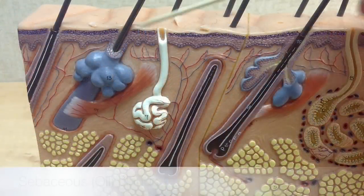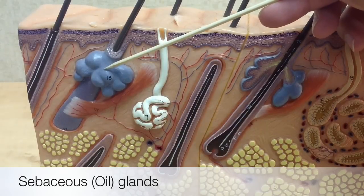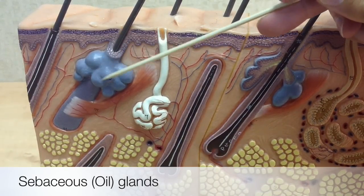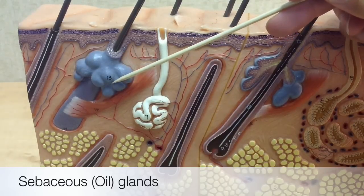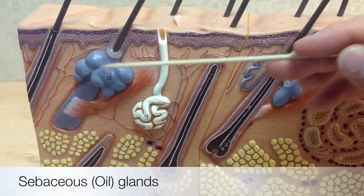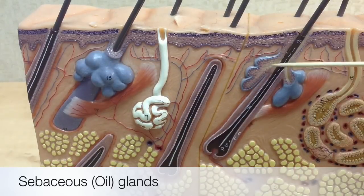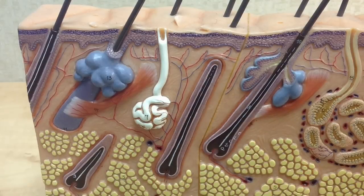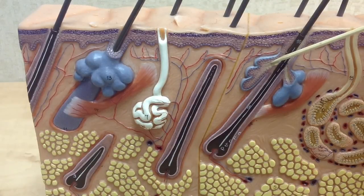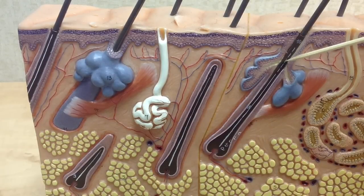The oil glands, also called sebaceous glands, are labeled number 13 on the model. These are rounded branched glands that are usually connected to the hair follicles, as we see here, and also in a sectional view. The part of the gland that secretes the oily mixture, which is called sebum, opens up into the hair follicle, and you can see that in this longitudinal section.